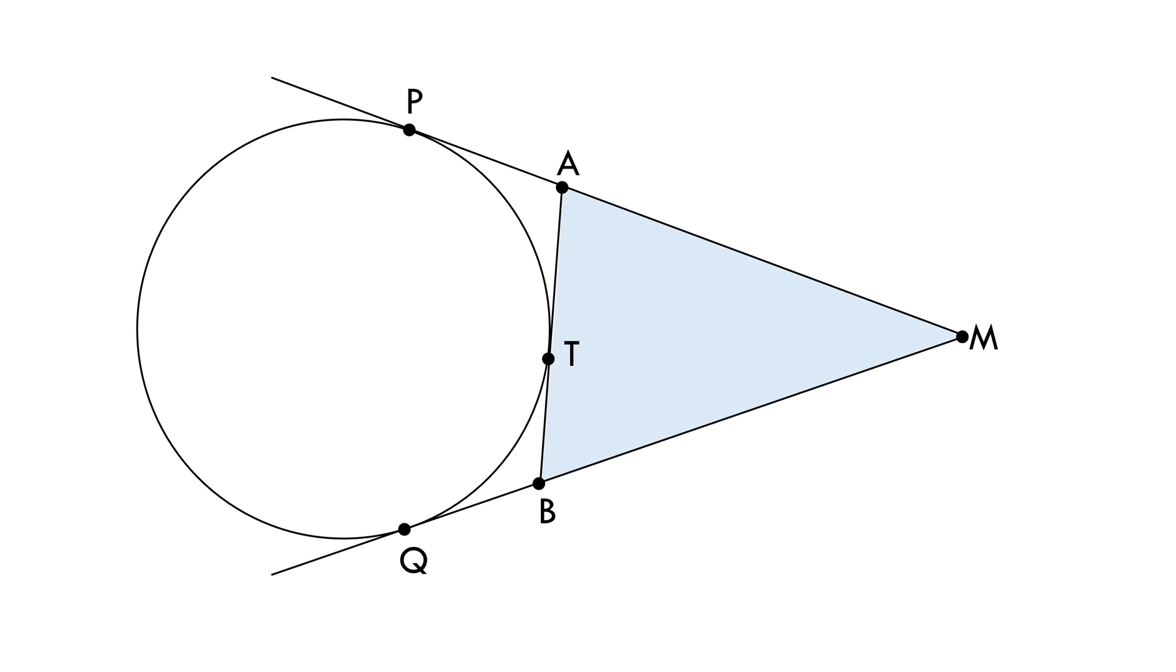I am using the method of considering extreme cases to solve this problem. Because the answer doesn't give the radius of the circle, we must understand that the answer is independent of the radius of the circle, or independent of how big or small the circle is. So we are free to consider the radius of our choice if that makes it easy for us to solve.